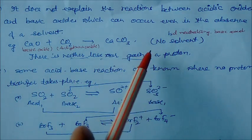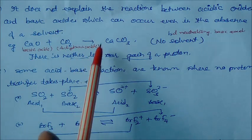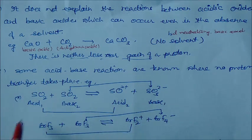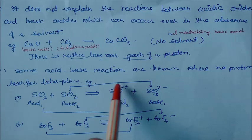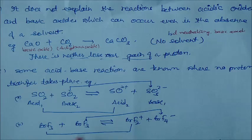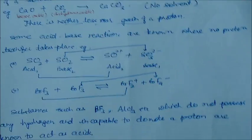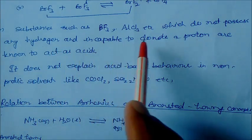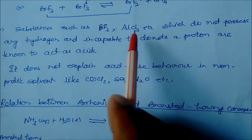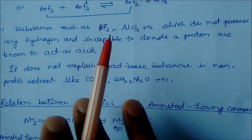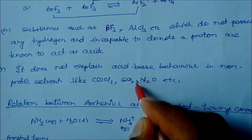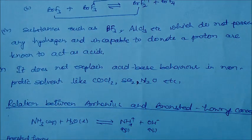There are some acid-base reactions involving no proton transfer that cannot be explained by Bronsted-Lowry. For example, reactions involving SO2 and BrF3 are acid-base reactions but involve no proton transfer. Substances such as BF3 and AlCl3, which do not possess any hydrogen and are incapable of donating protons, are also known to act as acids — which Bronsted-Lowry fails to explain. Additionally, it does not explain acid-base behavior in some non-protic solvents like COCl2, SO2, and N2O.